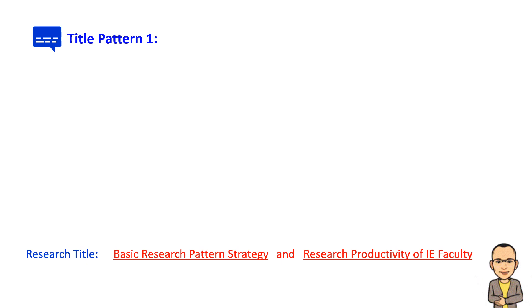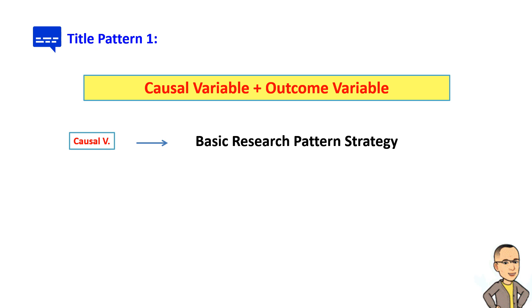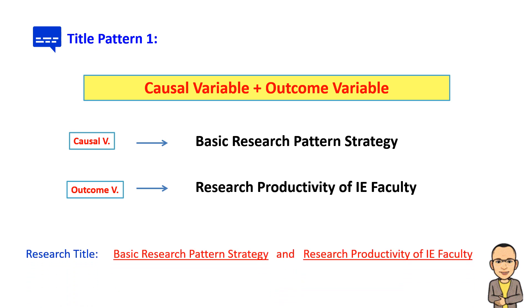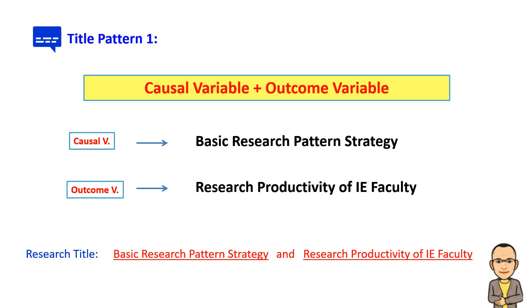As previously presented, the first title pattern is the simplest way of crafting a research title. It involves combining two variables — the causal variable, which is the basic research pattern strategy, and the outcome variable, which is the research productivity of IE faculty — joined by the conjunction 'and.' One can assume that the study is experimental, as the first variable represents an intervention and the second represents an effect or outcome. It may also be assumed that it is relational. This somehow creates an interest in reading the content of the paper.